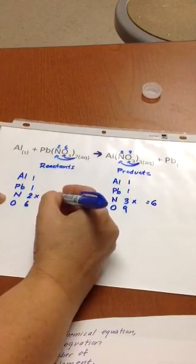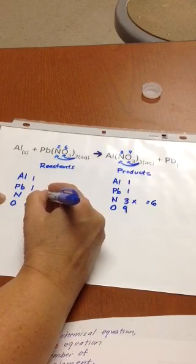So what number times two is six? The answer to that, of course, is three. And that's the number that I place right here.